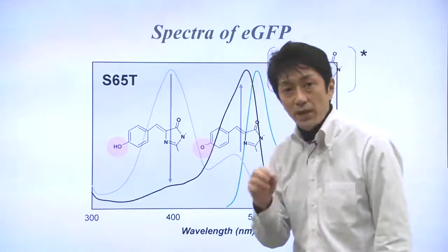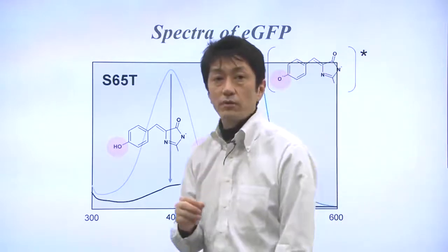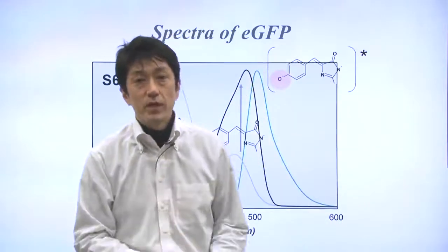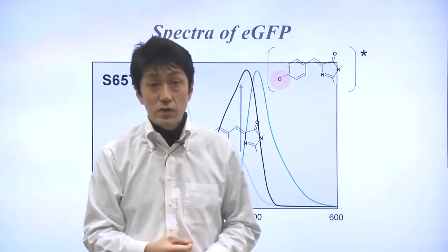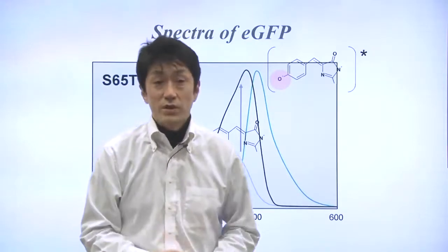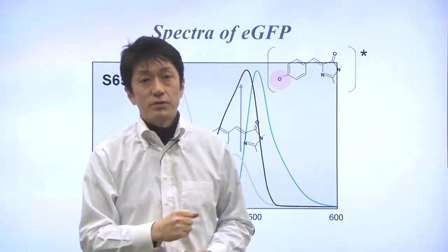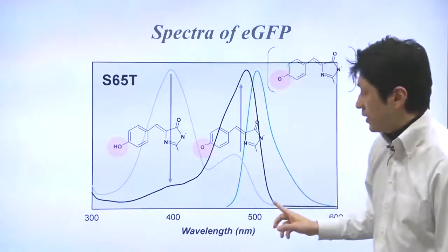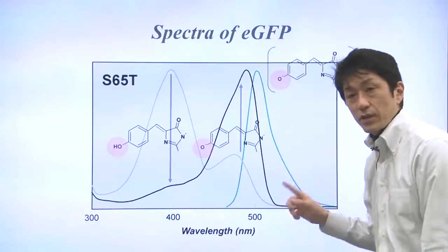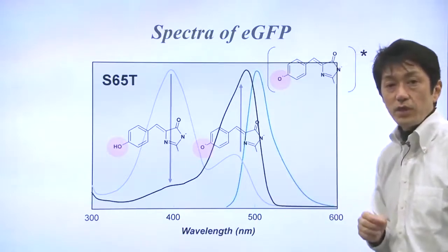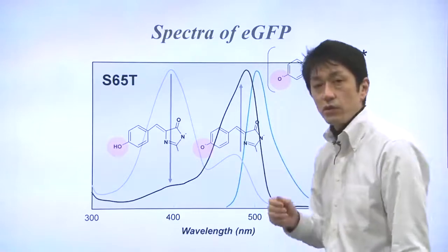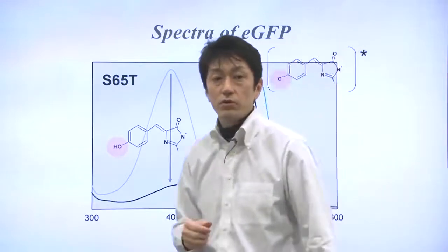So, this mutation dramatically improved the spectral characteristics of GFP, resulting in increased fluorescence and photostability. But the peak of emission was kept at 505 nanometers. Currently, EGFP is more extensively used for tracking biological events.